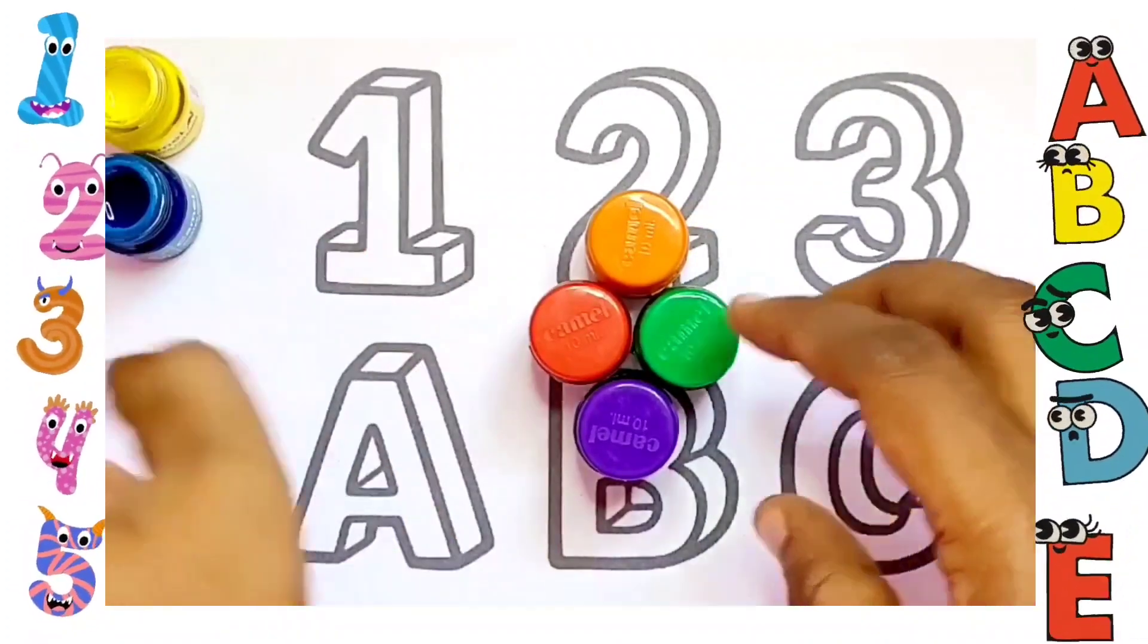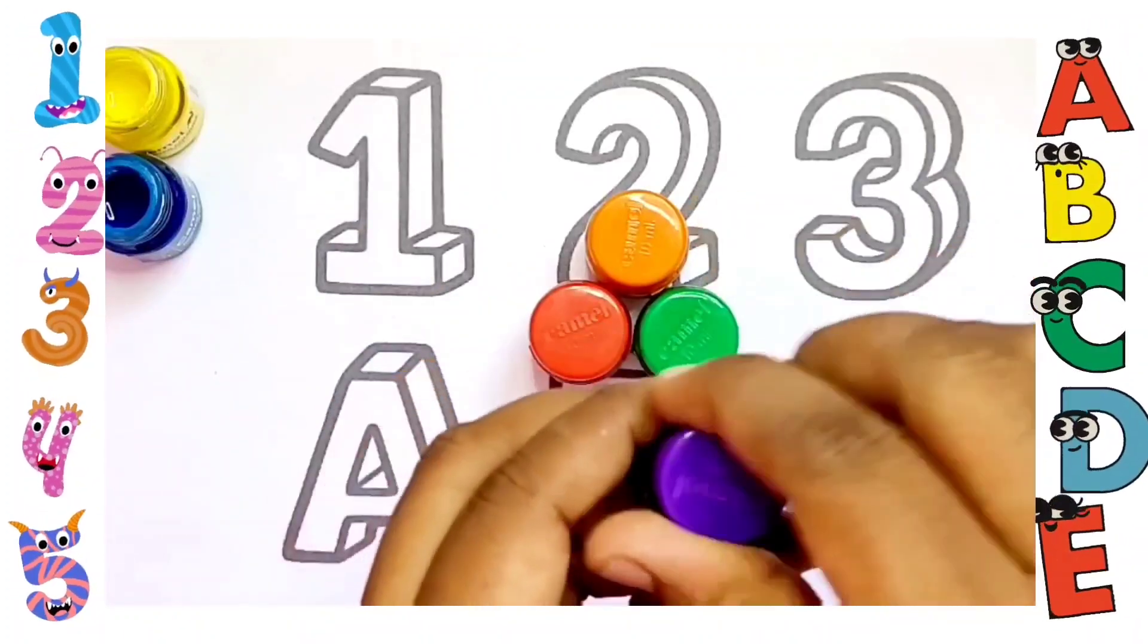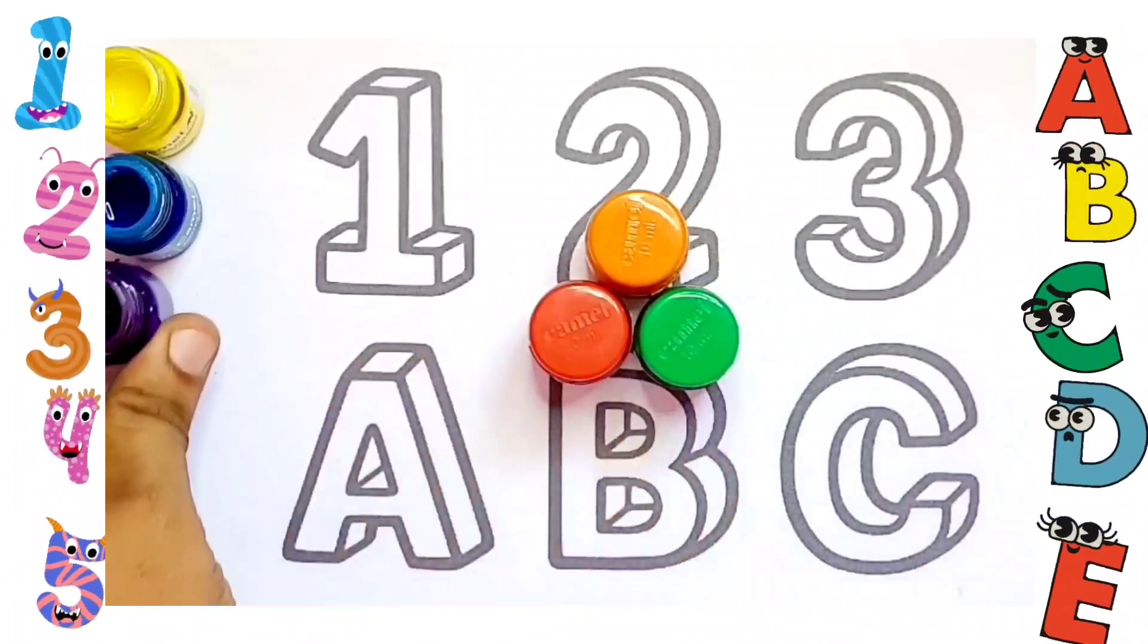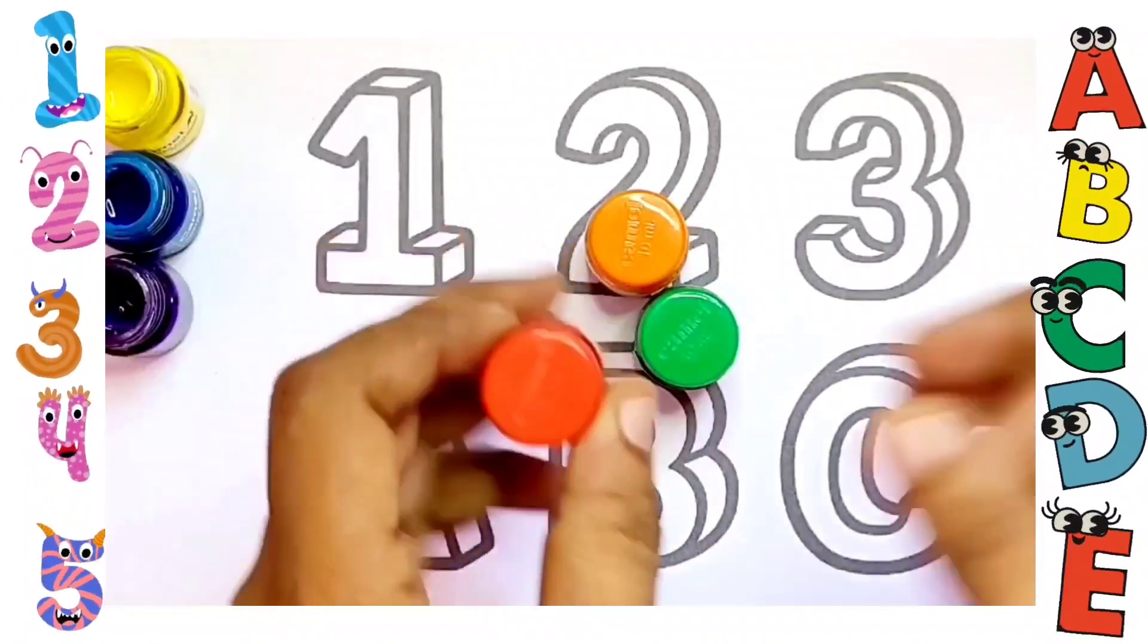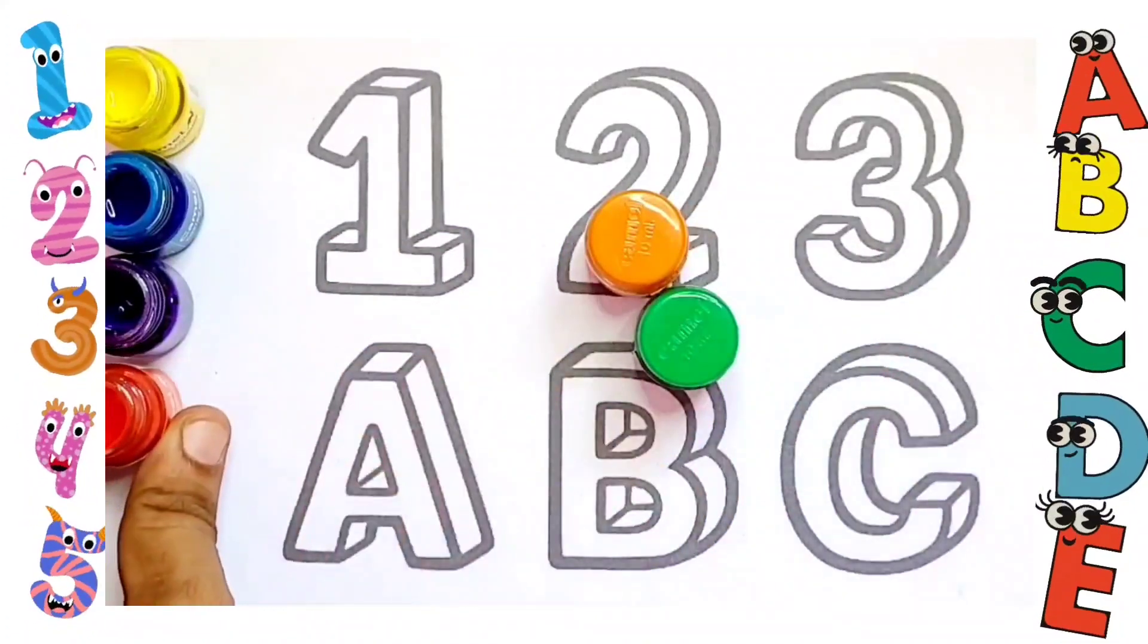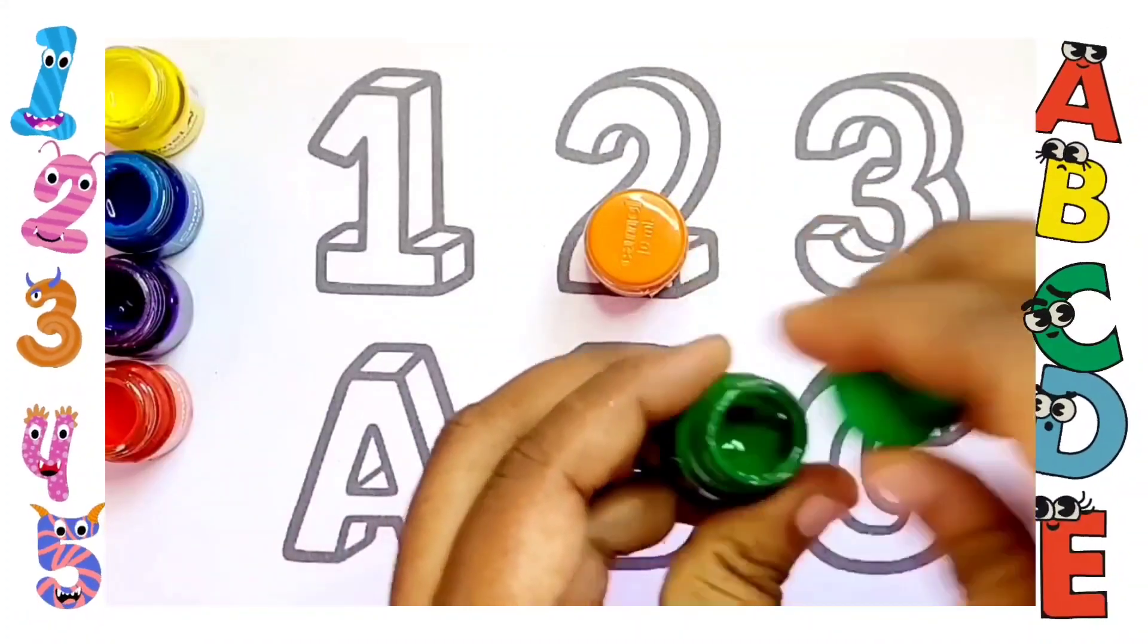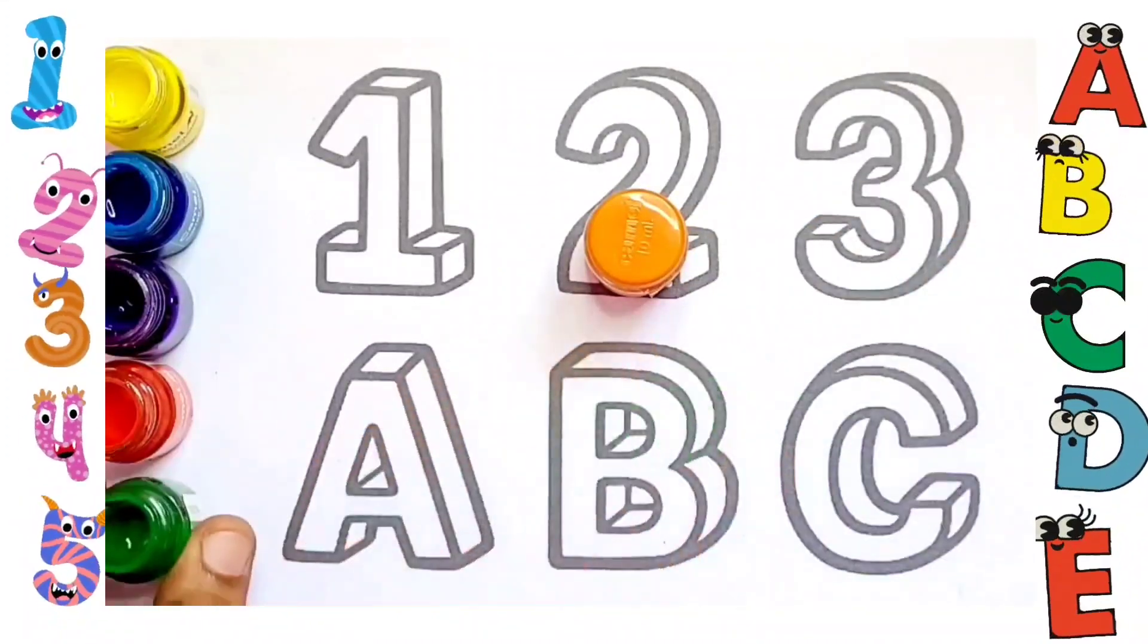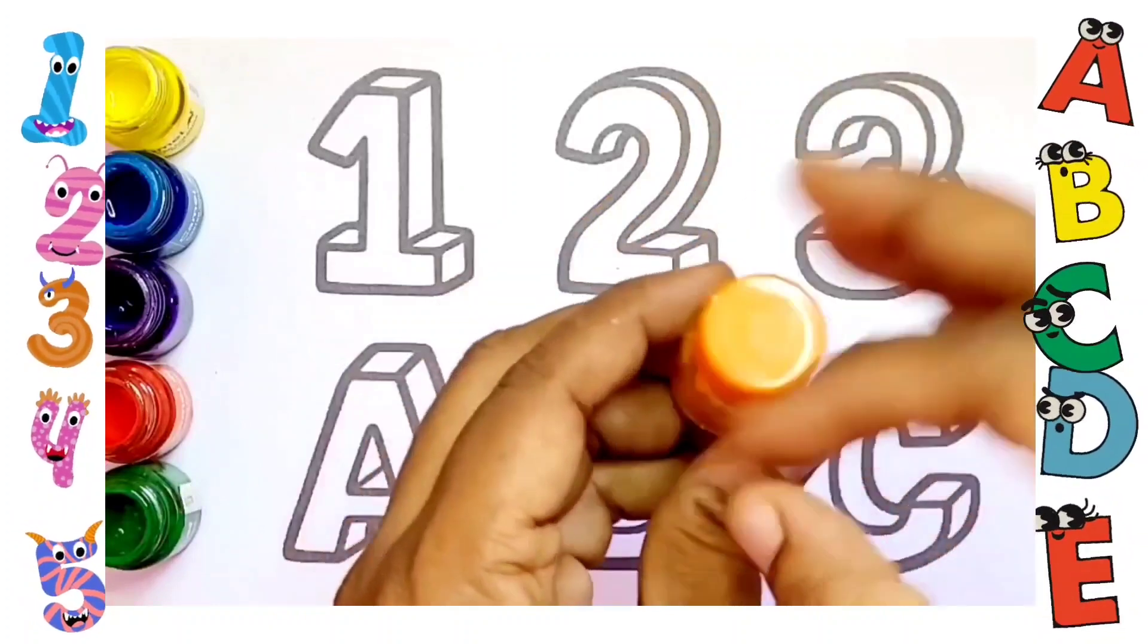This one is purple, purple color. Next, red color kids, this is red. This one is green, green color, and this is orange color, this is orange.